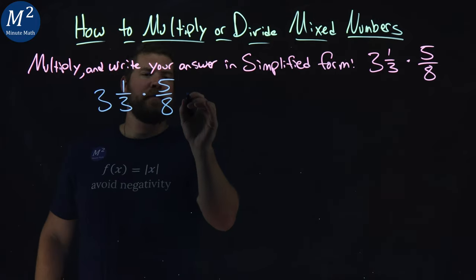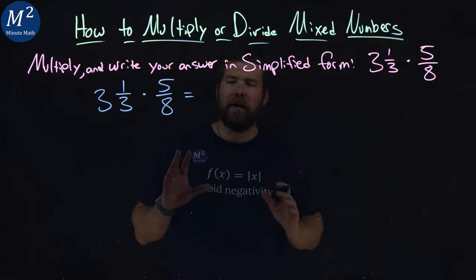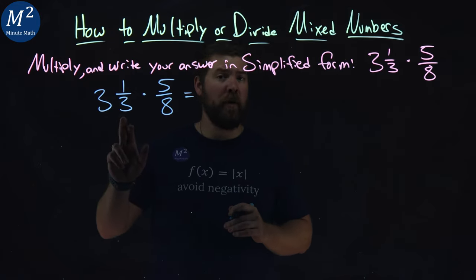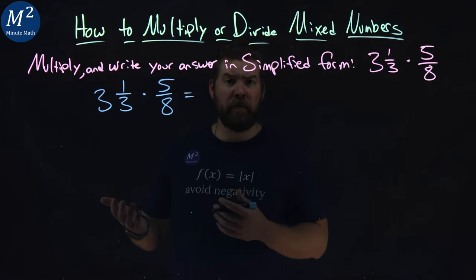Well, multiplying fractions, we want to write both of these as improper fractions. So I'm going to take this first one, three and one-third, and convert it to an improper fraction.